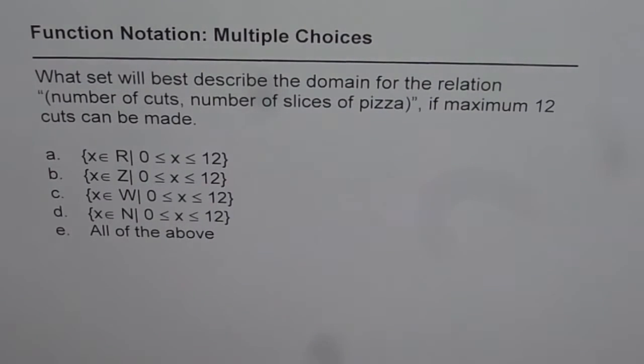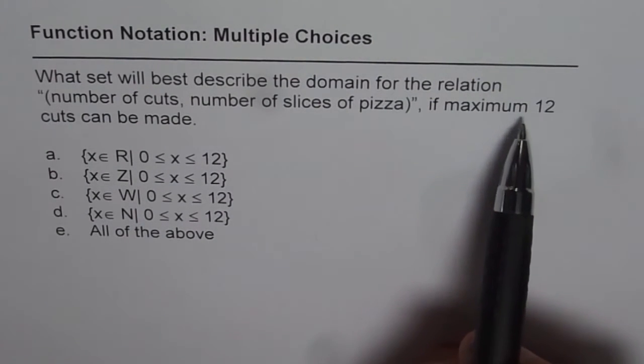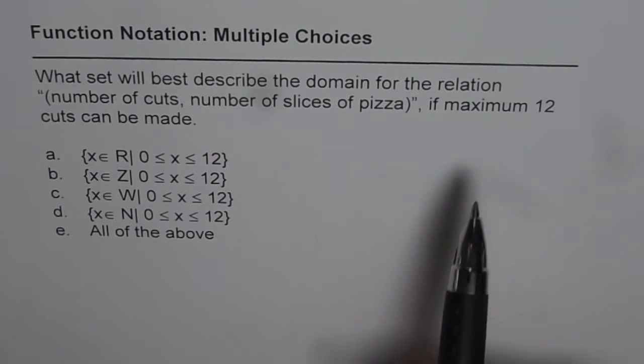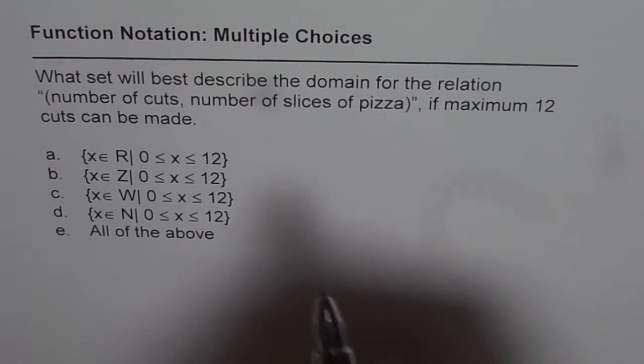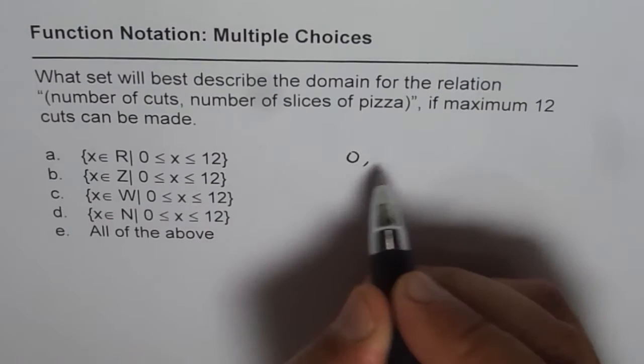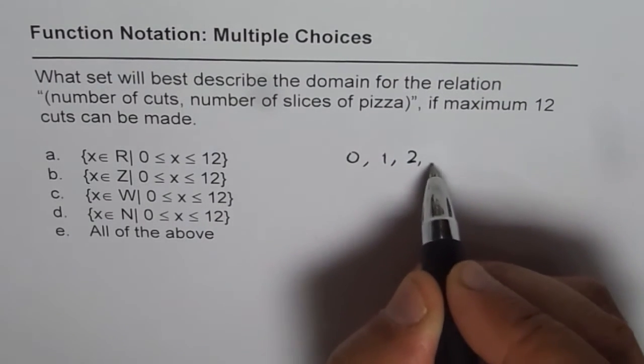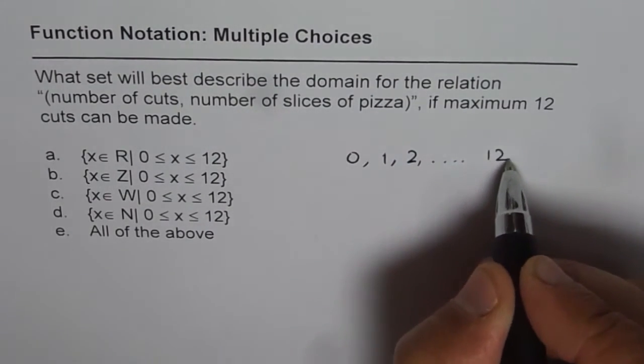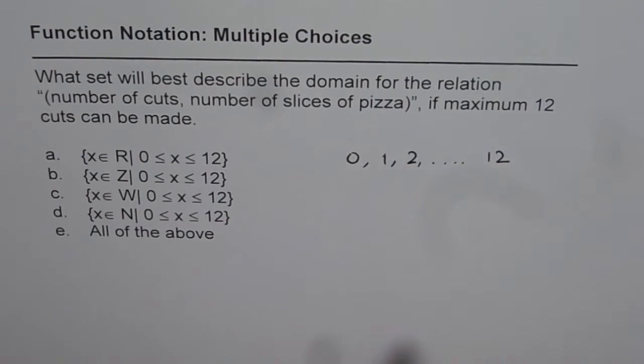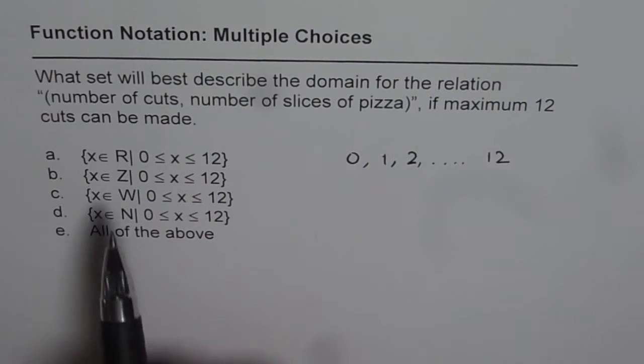Now if the maximum is 12 cuts, then how many cuts can you make? The number of cuts could be 0, 1, 2, and so on till 12. These are the number of cuts and these are part of our domain. What we are given here is x belongs to...